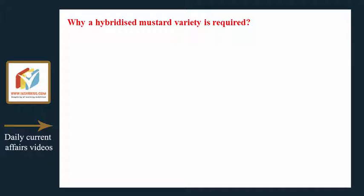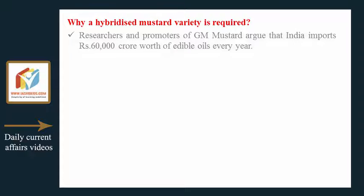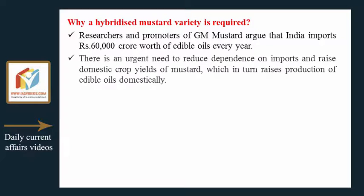Researchers and promoters of GM mustard argue that India imports edible oils worth around 60,000 crore rupees every year. There is an urgent need to reduce dependence on imports and raise domestic mustard crop yields, which in turn raises domestic production of edible oils. Hybridization is a potential technique to improve yields, as it has been successfully demonstrated with many other crops.